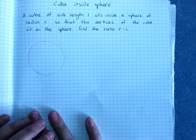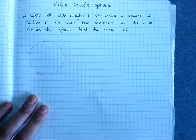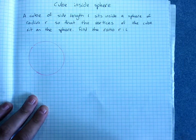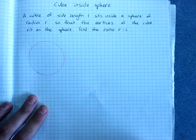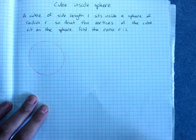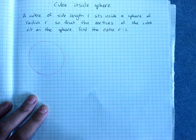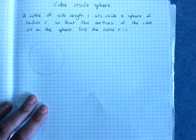There's a tricky question in the textbook where we've got a cube inside a sphere. A cube of side length L sits inside a sphere of radius R so that the vertices or corners of the cube sit on the sphere. Find the ratio R to L.